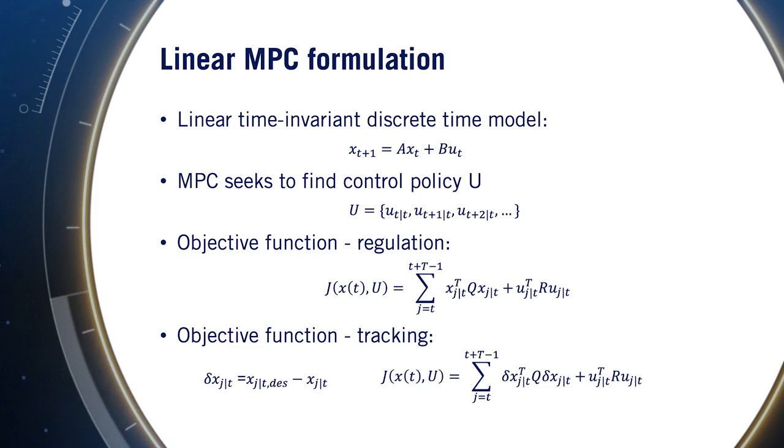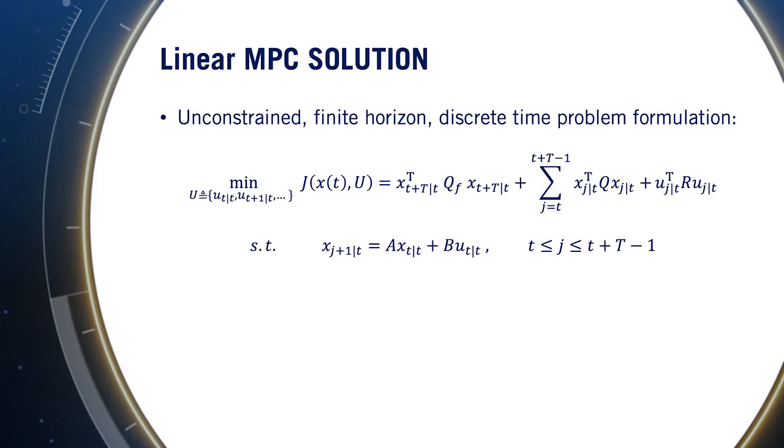If instead we need to track a reference signal such as a desired trajectory, we modify the formulation to include the error delta x relative to the desired state.